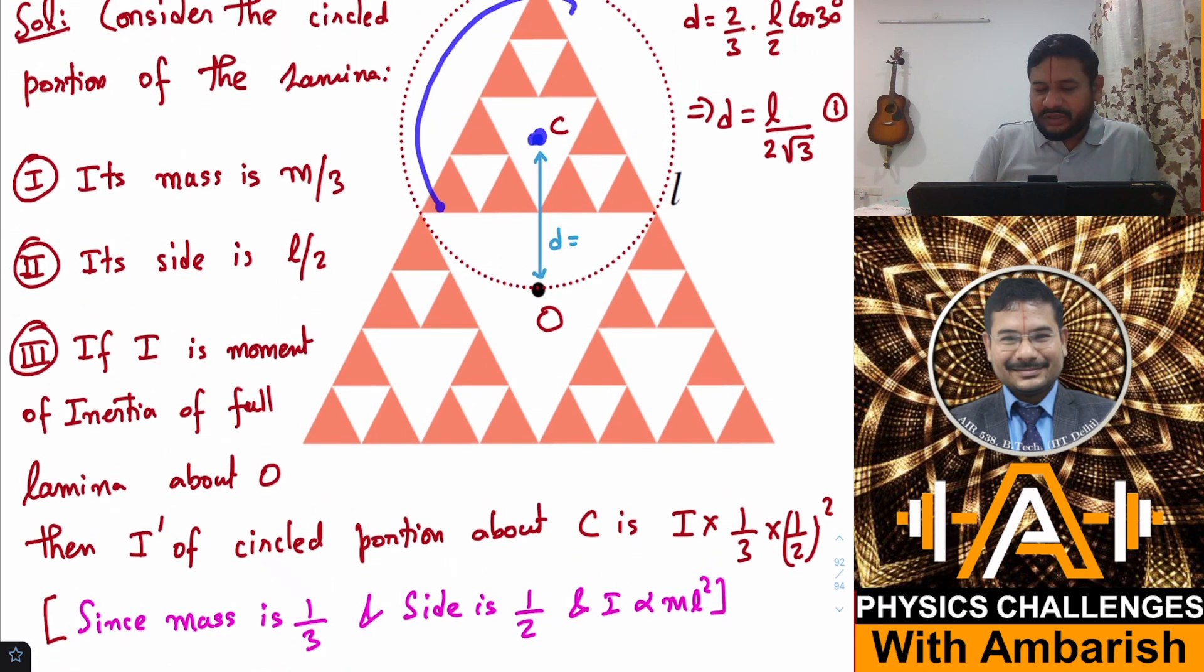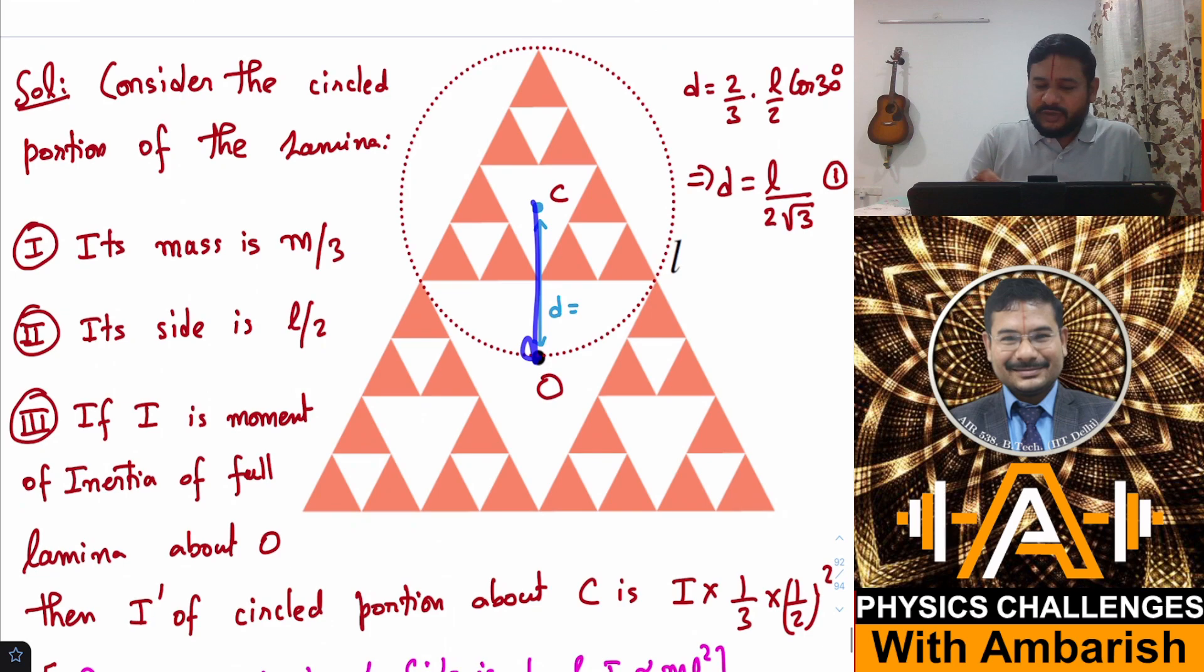But then I want to find out the moment of inertia of the circled triangle about the center of the original geometry. Then you need to use the parallel axis theorem. So you need to find out this distance d. How do you find this d?